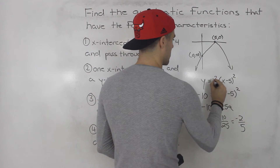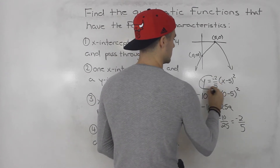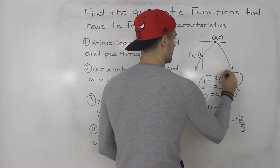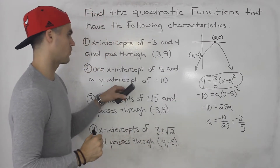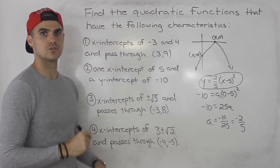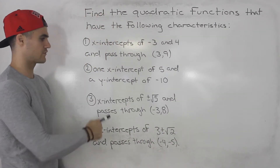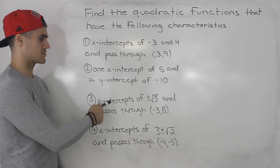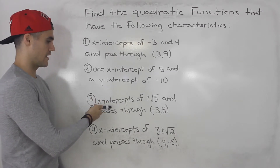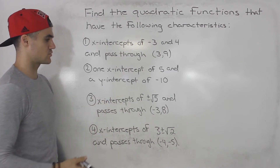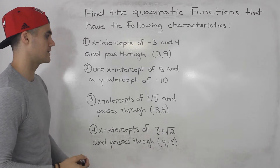That gives us the final answer for number two. For number three, we have a quadratic function that has x-intercepts of plus or minus root five and passes through the point (negative three, eight).